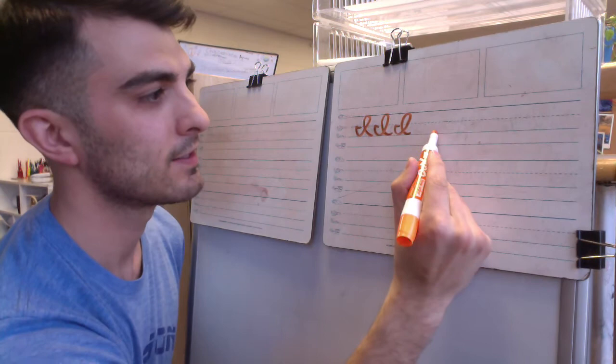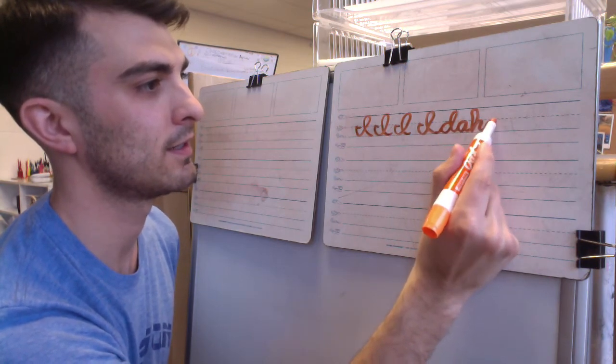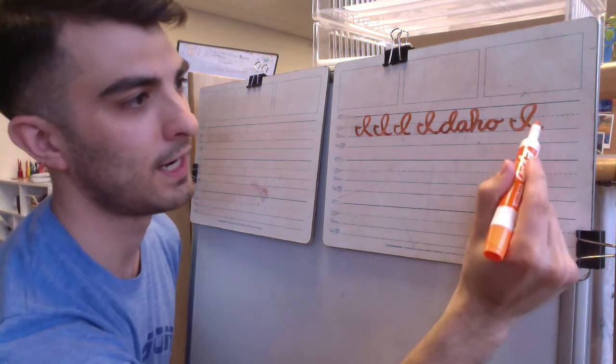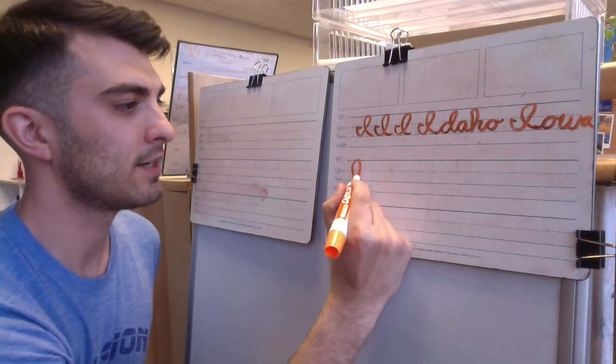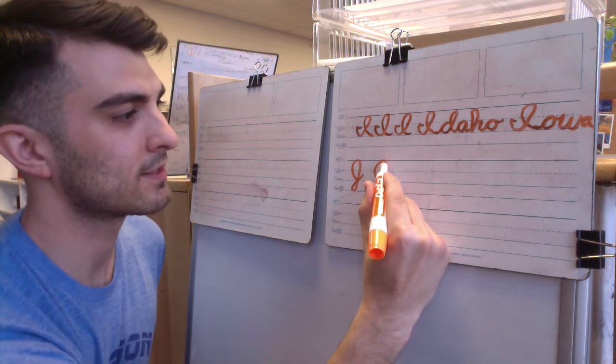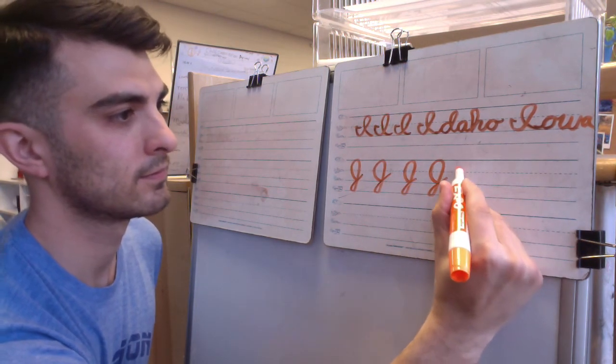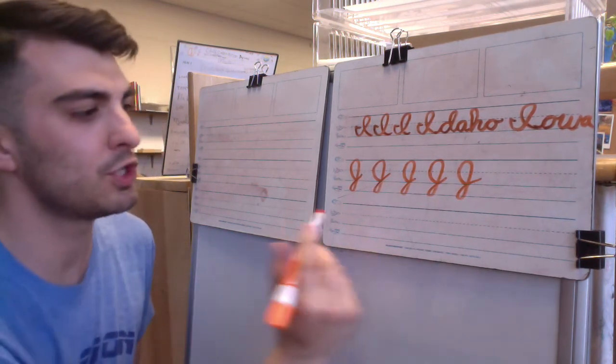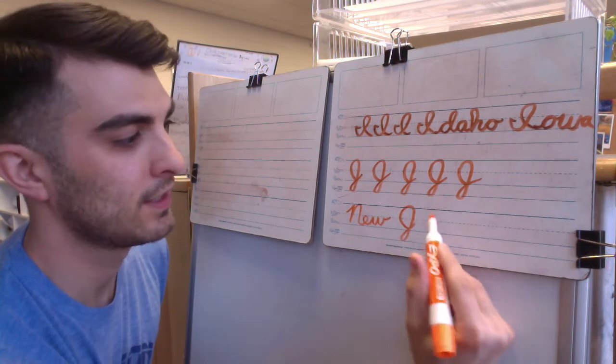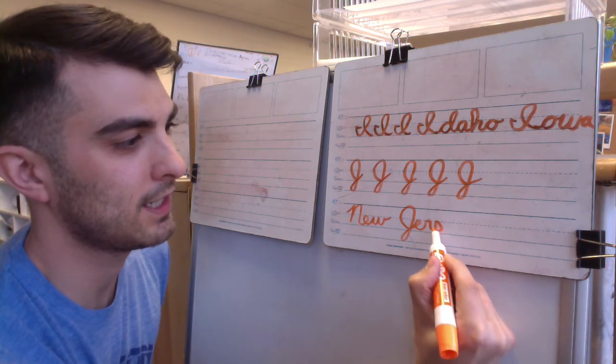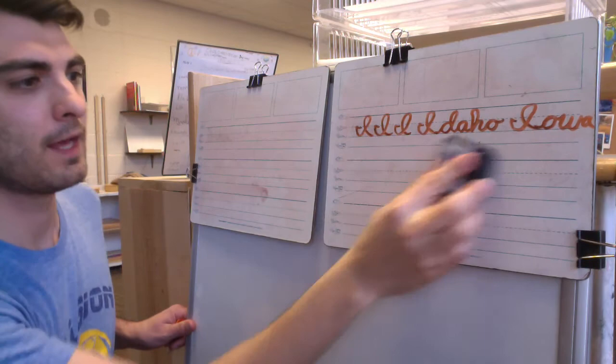So when I write Idaho, I start on the right side. Then I'll pick back up here and connect to my D-A-H-O. All right, and that uppercase J starts down on the grass line, back up to the skyline and down. Grass to sky, back through and up. So for this one, I'm gonna write New Jersey. Again, another capital N which connects directly to the E. New J, it's gonna connect directly. E-R-S-E-Y. New Jersey. Thanks for sticking with me on that one. I'm sorry I made such a juicy mistake on camera.